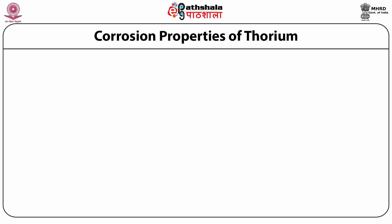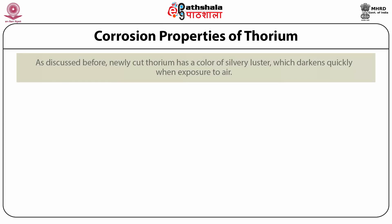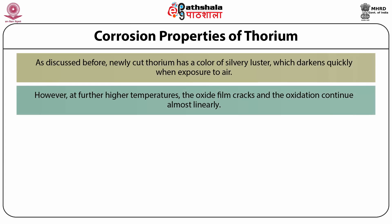Now let us discuss the corrosion properties of thorium. Newly cut thorium has a silvery luster which darkens quickly when exposed to air. The oxidation generates a protective oxide layer of thorium oxide which can protect up to a temperature of 350°C. However, at further higher temperatures, the oxide film cracks and oxidation continues almost linearly. At about 1100°C, the oxidation rate becomes parabolic again.